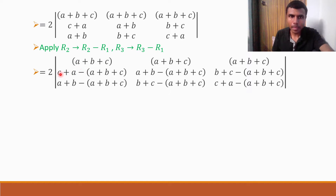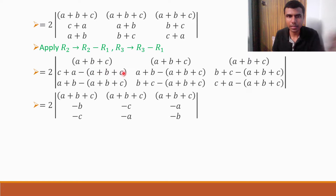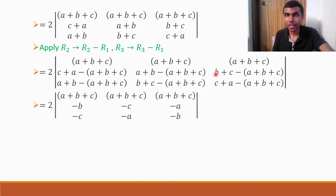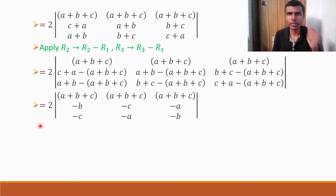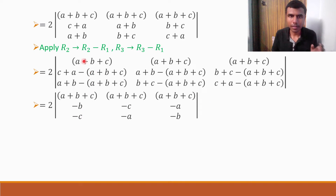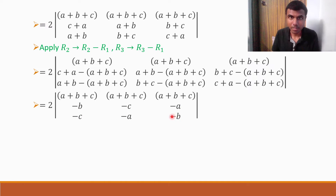Let's simplify. C plus A minus A minus B minus C — A and minus A cancel, C and minus C cancel, so I'm left with minus B. Likewise, simplifying A plus B minus A minus B minus C gives minus C. And B plus C minus A minus B minus C gives minus A. I'm actually quite close to my goal now — I've got single-term elements: minus B, minus C, minus A, minus C, and so on.